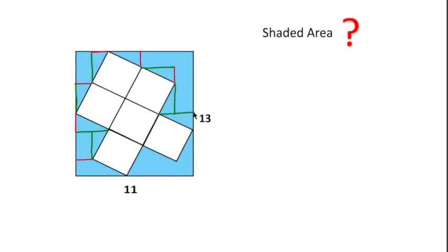If we consider this length as red line and this will also be red line — if we consider this length as 'a', this length as 'a', and this green line length as 'b', then we can say this is also 'a' and this is also 'a', and this green line — we will write here 'b', and this is also a green line, so this distance is also 'b'.